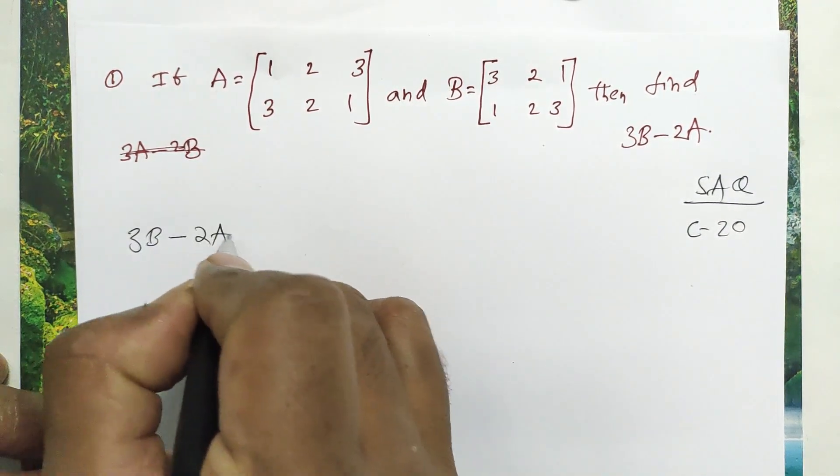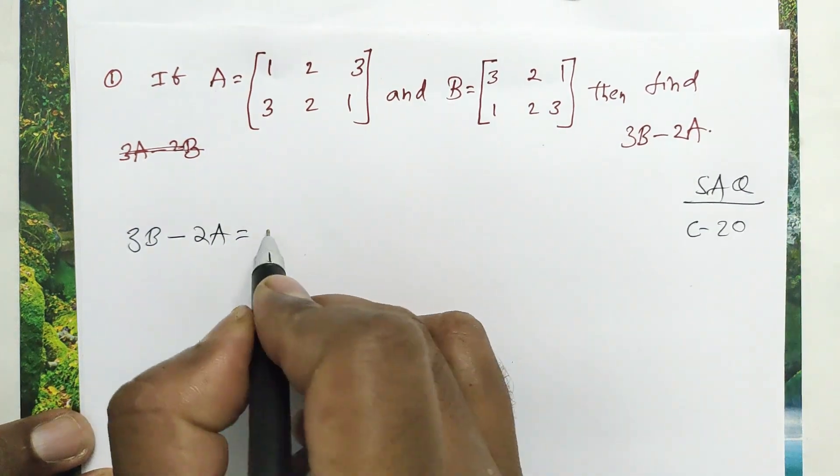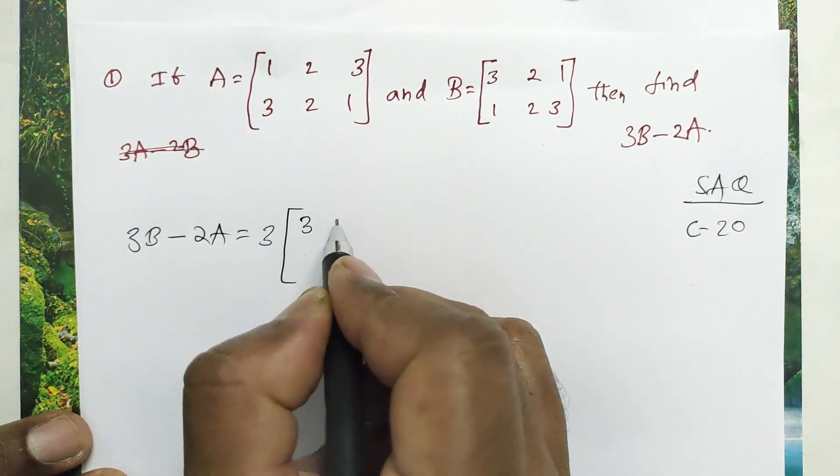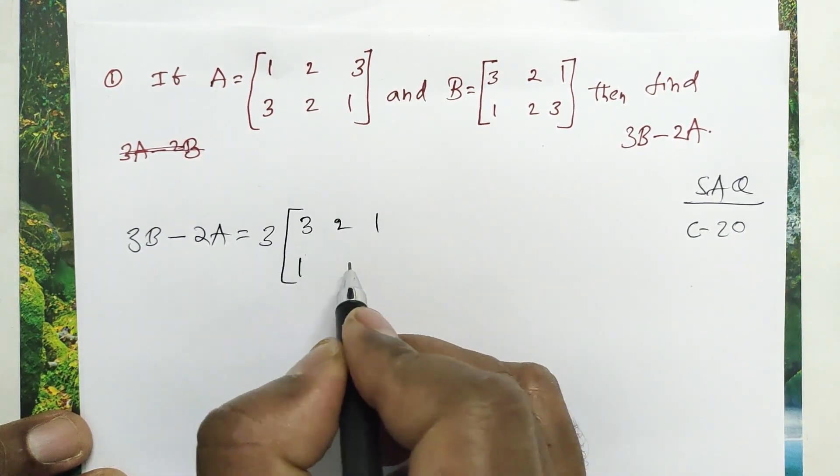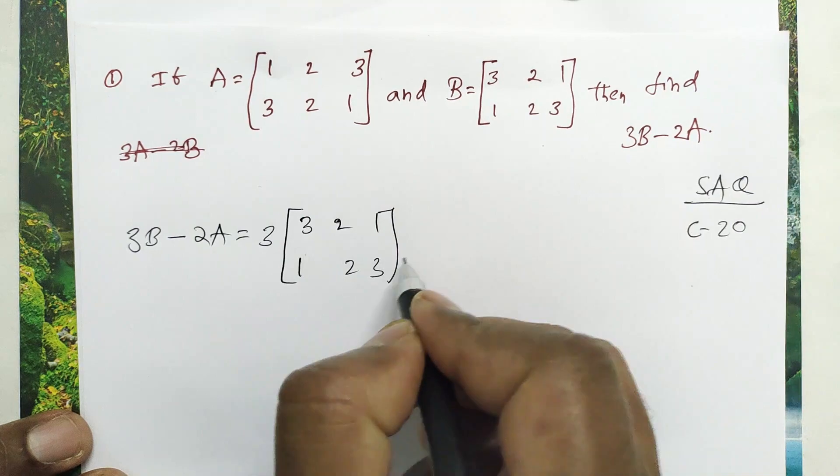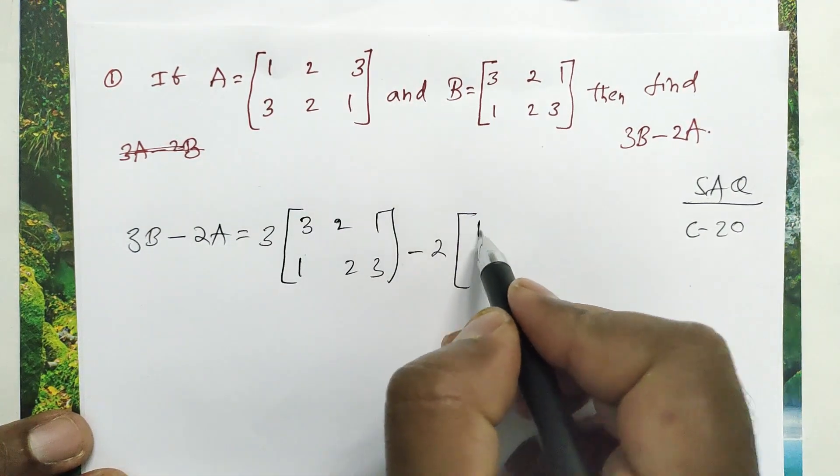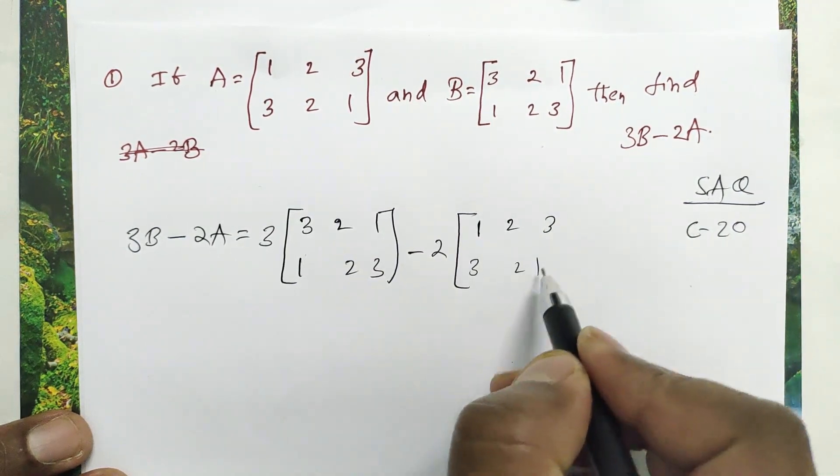3B minus 2A, adudunarandi, 3 into matrix B raandi. Matrix B amana ki [3, 2, 1; 1, 2, 3] minus 2 into matrix A raandi [1, 2, 3; 3, 2, 1].